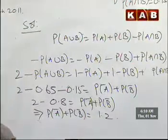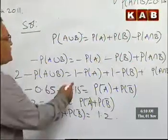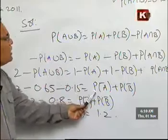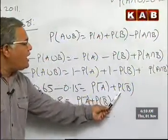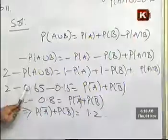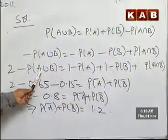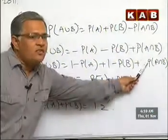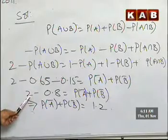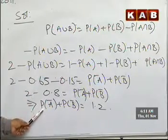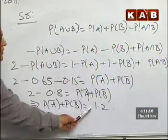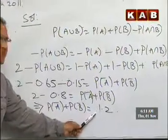Check here, this is 1 minus probability of A, which according to the rule is probability of A bar and probability of B bar. Whatever is here extra, that is transposed to the other side. You are given with these two values, which are substituted and simplified, giving us probability of A bar plus probability of B bar is equal to 1.2, which is the required answer.